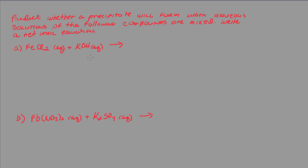Here we're asked to predict whether a precipitate will form when aqueous solutions of the following compounds are mixed, and to write a net ionic equation. In the first one, we have an aqueous solution of iron(II) chloride and potassium hydroxide. We mix them together, and the question is: will a precipitate form?